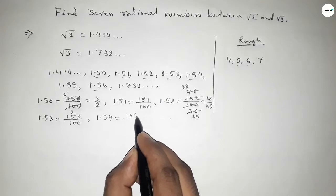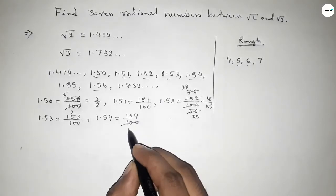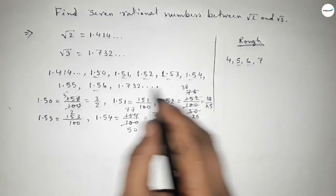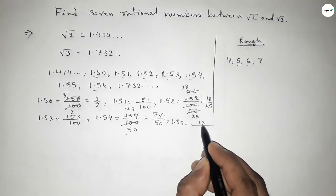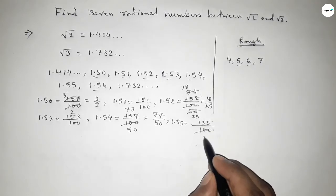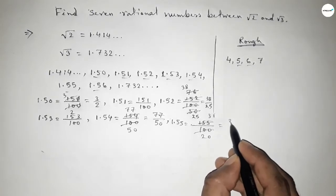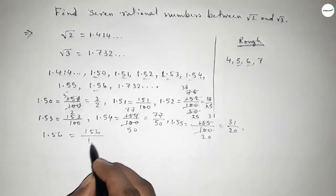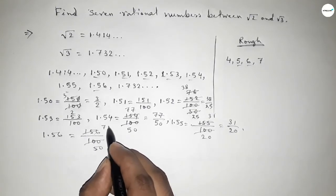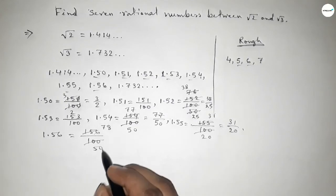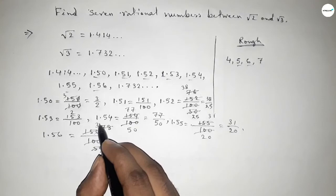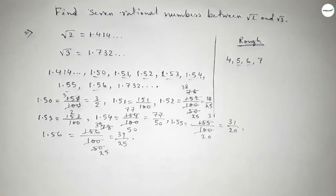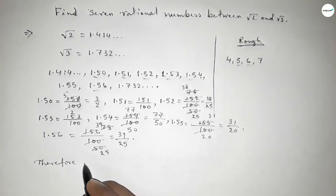1.54 equals 154 over 100. If you divide both numbers by 2, this is 50 and this is 77, so 77 over 50. If you divide again by 2, 154 divided by both numbers gives 79 over 25. Therefore, seven rational numbers between √2 and √3 are...